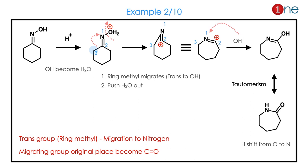The next example is very important and is asked in many examinations. Here it is a ring oxime, so you have a trans carbon within the ring. The ring will expand from a 6-member to a 7-member ring. Then the cation forms, OH minus attacks, tautomerism occurs, and the final product is obtained. The trans group is the ring methylene carbon, which moves, and C=O is formed there. Ring expansion is the key concept here.